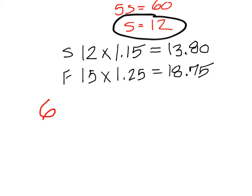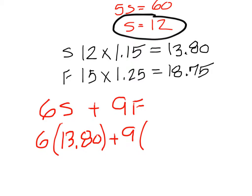For 6, I'm going to multiply that by 13.80. And then for the 9, I'm going to multiply that by 18.75 for the flower pot and come up with his new total. So 6 times 13.80 and then plus 9 times 18.75. That would be 251.55.